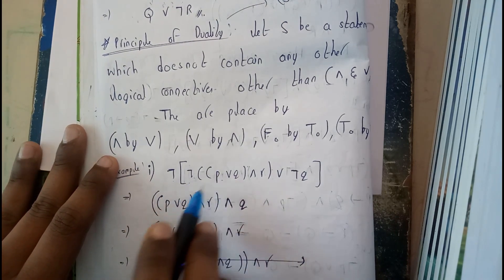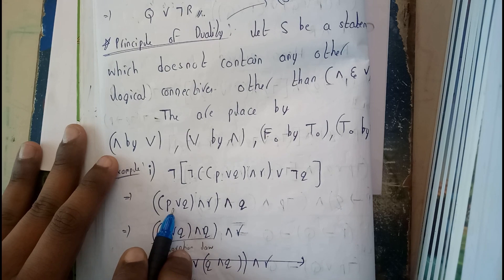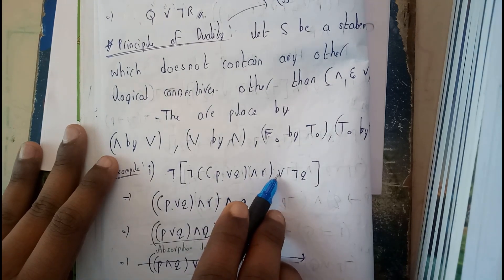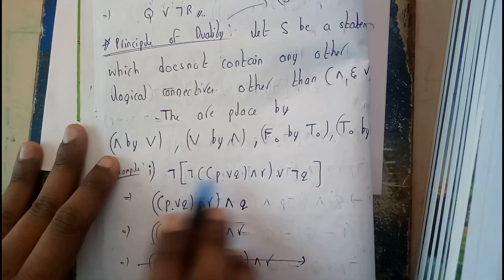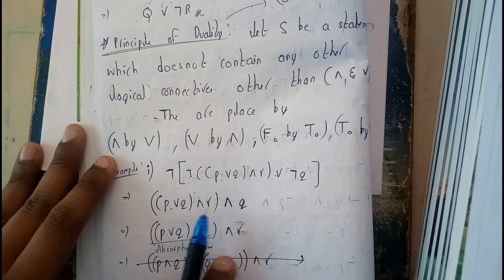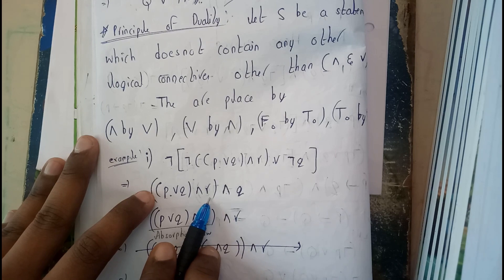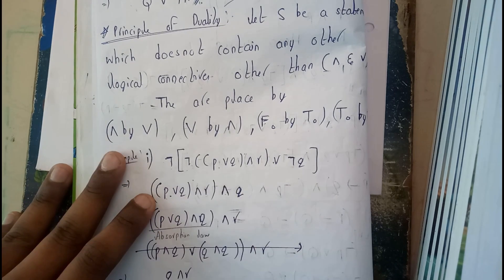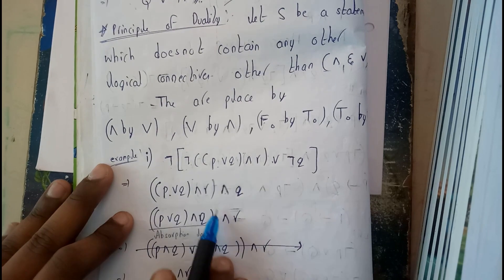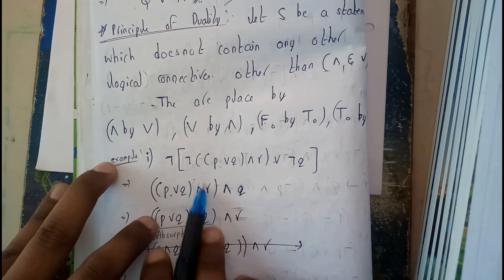Negation of negation of Q, you'll be getting Q. This is the absorption law. You'll be transferring this Q using the associative law—you can shuffle these elements. Write Q here, and now this is under absorption law.